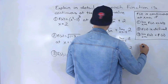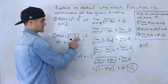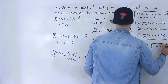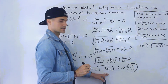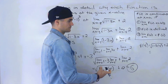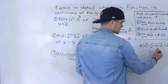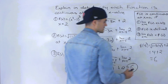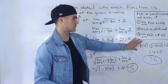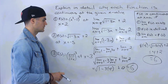Second step: we need to show f(-5) is defined. Plugging -5 into √(1 - 3x) + 2 gives √(1 - 3·(-5)) + 2 = √16 + 2 = 6. The limit equals f(-5), so the third condition holds, which means the function is continuous at x = -5.